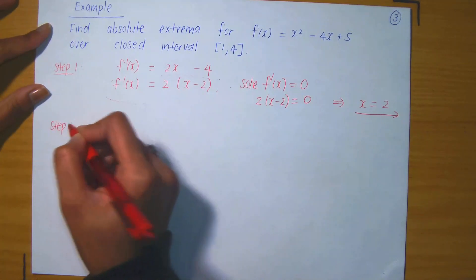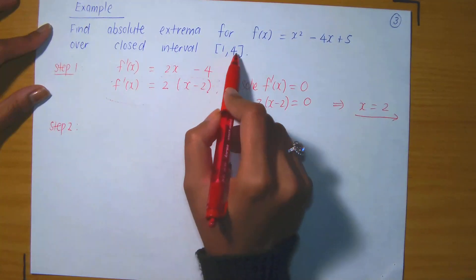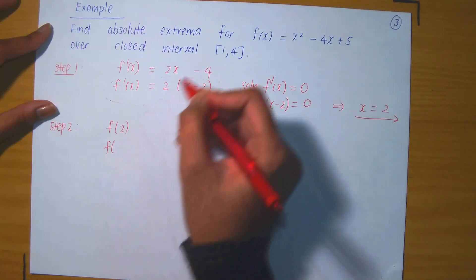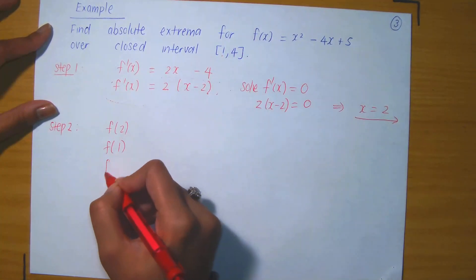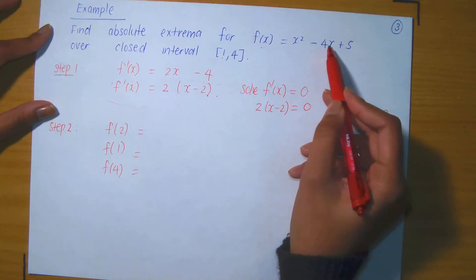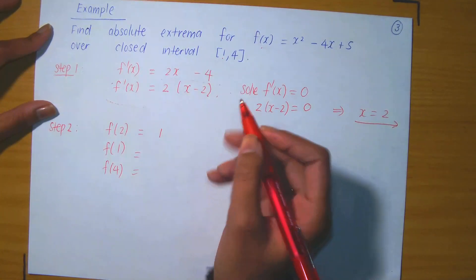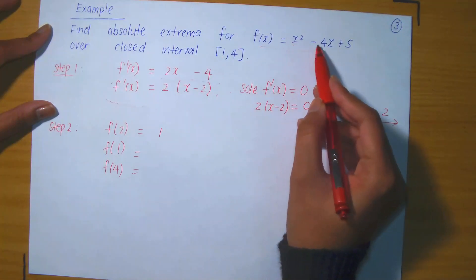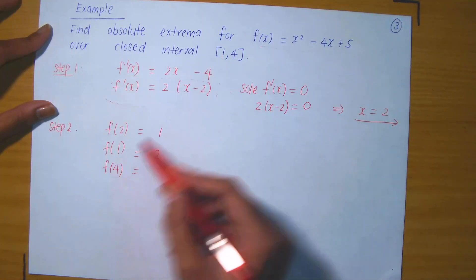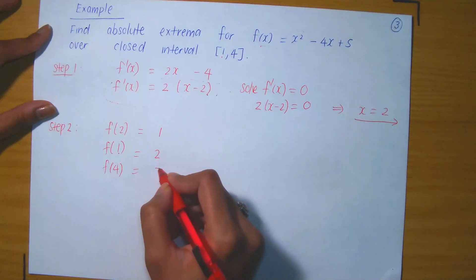Step two: we evaluate f(x) at each critical value and at the endpoints of the closed interval. We need f(2), f(1), and f(4). Substituting x = 2: 2² - 8 + 5 = 1. Substituting x = 1: 1 - 4 + 5 = 2. Substituting x = 4: 16 - 16 + 5 = 5. Step two is complete.